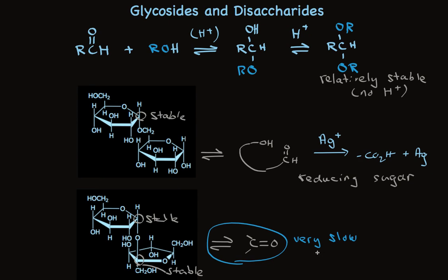On the other hand, this oxidation happens only very, very slowly. And this compound is not called a reducing sugar. So disaccharides can be broken into two groups. The ones that are easily oxidized, they're reducing sugars, and others that are not.